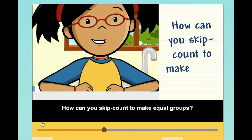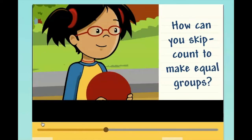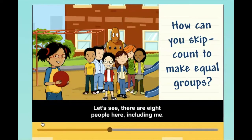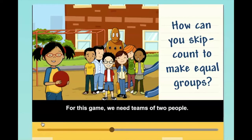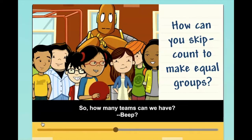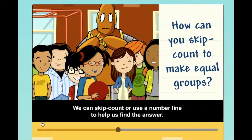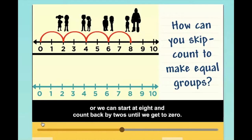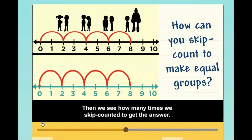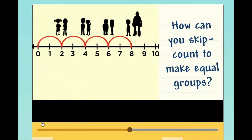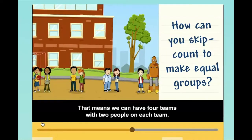How can you skip count to make equal groups? There are eight people here including me. For this game, we need teams of two people, so how many teams can we have? We can skip count or use a number line to help us find the answer. We can start at zero and skip count by twos until we get to eight, or start at eight and count back by twos until we get to zero. Then we see how many times we skip counted — I counted four times, so the answer is four. That means we can have four teams with two people on each team.